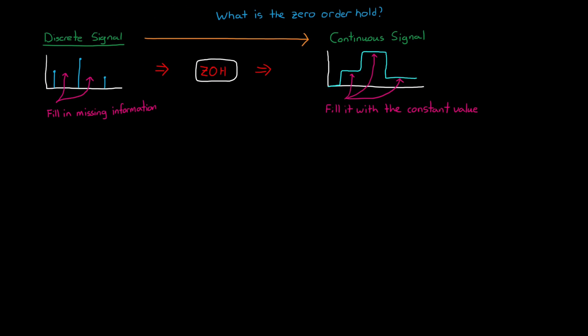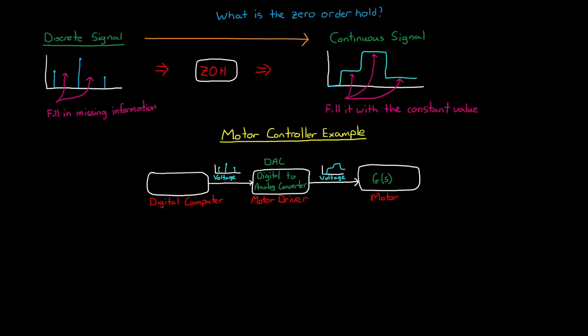The example I gave before was a motor driver, and we'll use that again to illustrate the point of the hold logic. The motor driver is supplied with a sequence of discrete voltages which are calculated by a digital computer. And then the digital-to-analog converter, which is a physical piece of electrical hardware, holds the voltage constant between commands, and then steps up or down to the new voltage at the next sample time. The motor, which is a continuous system, is spinning and reacting to the voltage that is output from the DAC.